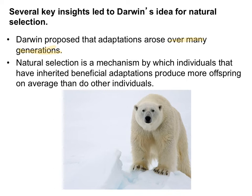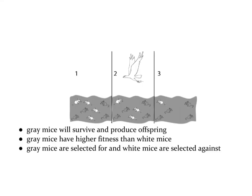Here's our definition for natural selection — it's in the middle box on page 9. It is a mechanism by which individuals that have inherited beneficial adaptations produce more offspring on average than do others. In other words, organisms with good traits are going to have more babies. Those babies will have the good traits, grow up, and have their own babies, and we're going to see these good traits over and over again.